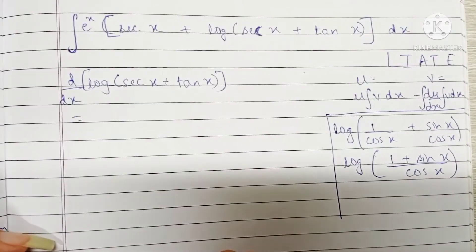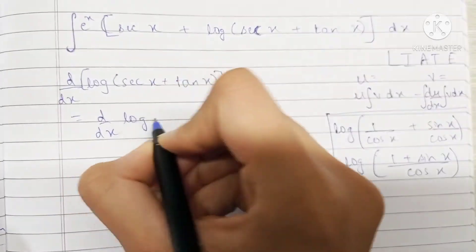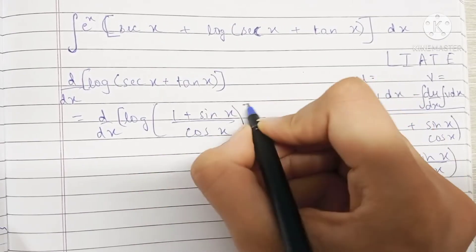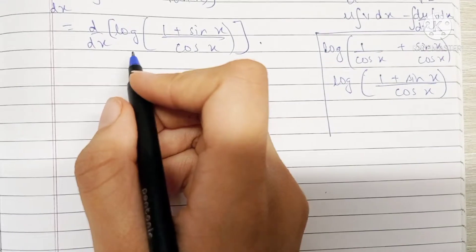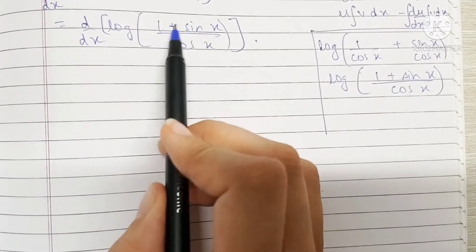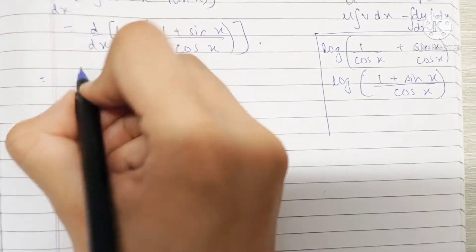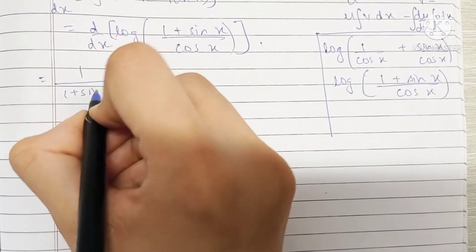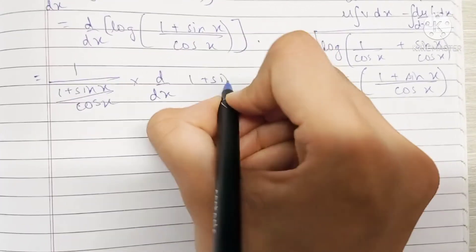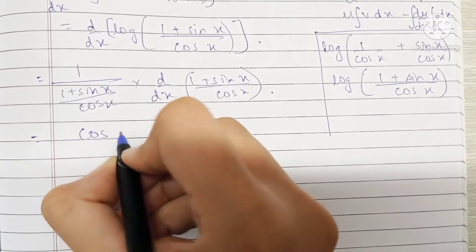So the differentiation of log(sec x plus tan x) is equivalent to the differentiation of log of (1 plus sin x)/cos x. We know that the differentiation of log x is 1/x, so the differentiation of log of this term would be 1 upon this term into the differentiation of this term, which is 1 upon (1 plus sin x)/cos x into the differentiation of (1 plus sin x)/cos x. This becomes cos x upon (1 plus sin x).